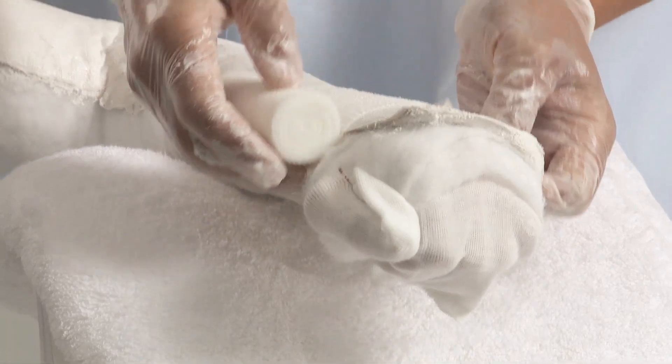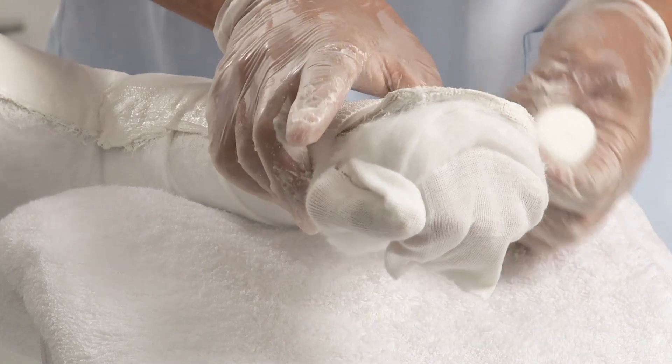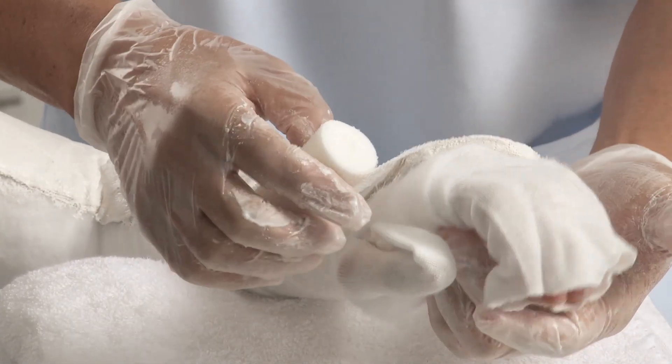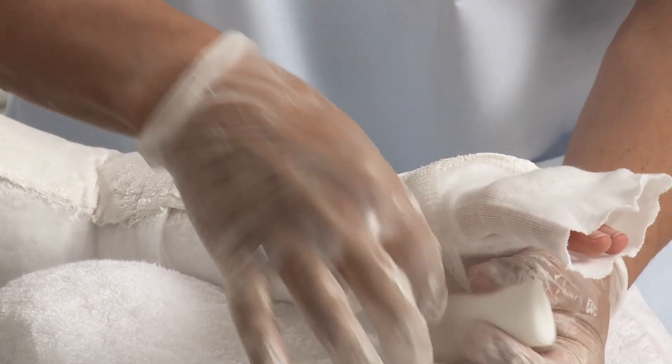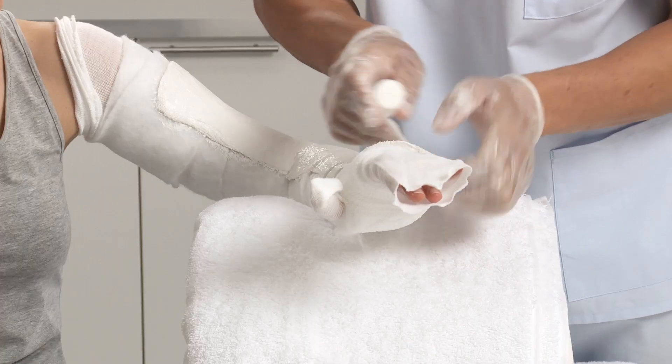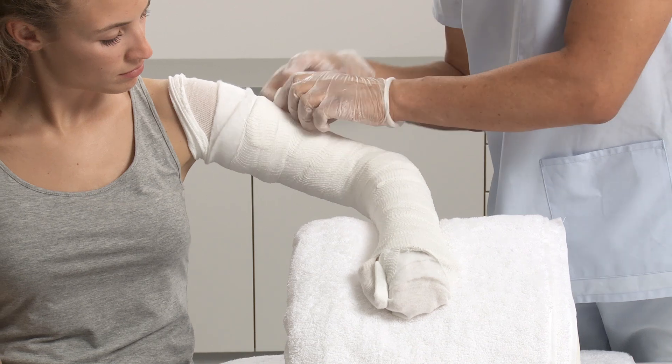To secure the splint, wrap with the bandage starting at the hand, passing through the web space once. Continue wrapping going proximately, overlapping the bandage by 50%. Cut the bandage and secure.